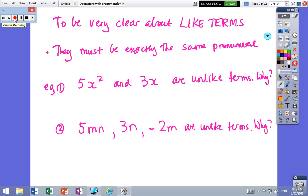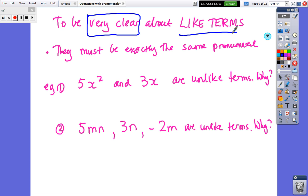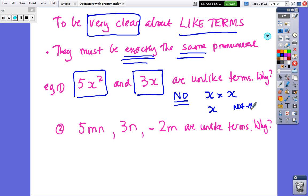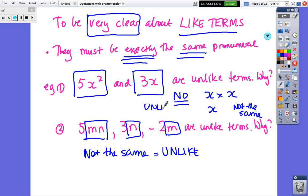Copy that down and come to the next slide. So we need to be very clear about like terms, because they must be exactly the same before we can add or subtract. So are those the same? And the answer is no. x squared is x times x, x is just x - they're not the same. The next one, mn and n - they're not the same. They're unlike, this one's unlike as well.